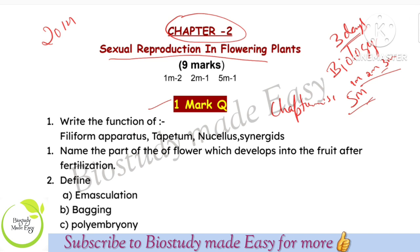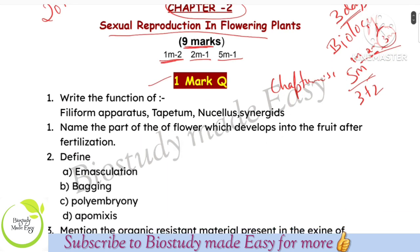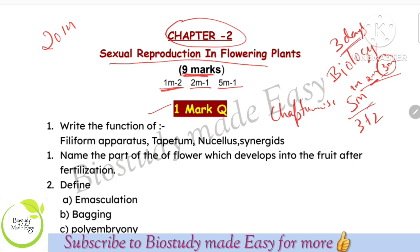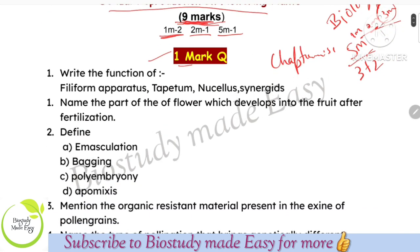Sexual Reproduction in Flowering Plants — be prepared for all types of questions, because this is an important chapter. You will get full 9 marks from this chapter. This is the guide pollen tube — how the guide pollen tube works. The function of Tapetum is nourishment to pollen grains.